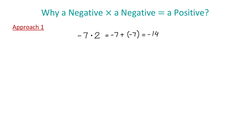But now, what about multiplying negative 7 by negative 2? We know that a negative multiplied by a negative is a positive, so negative 7 times negative 2 will be positive 14. But then, why is a negative multiplied by a negative a positive? While we don't have such a simple explanation as in the case of negative 7 times positive 2, let's look at the following example.